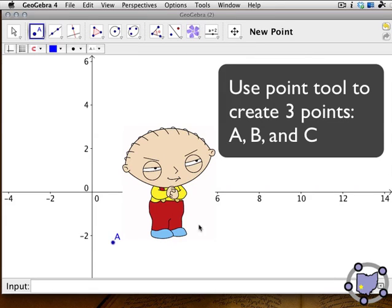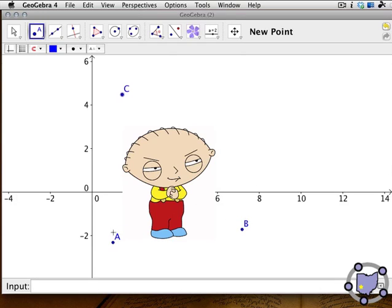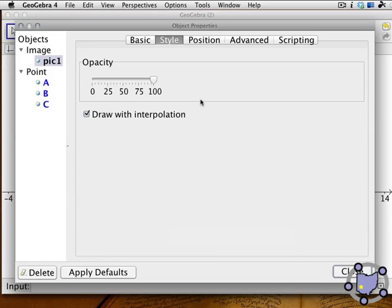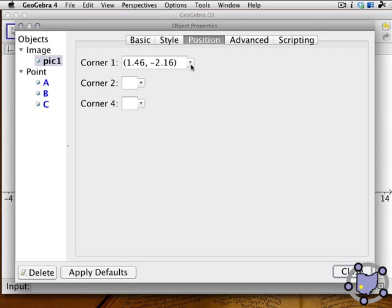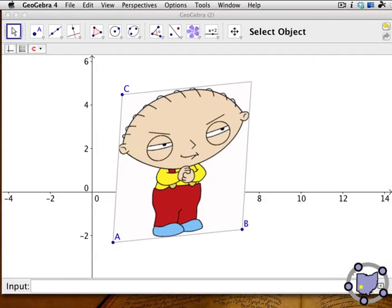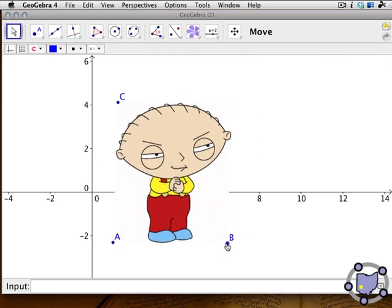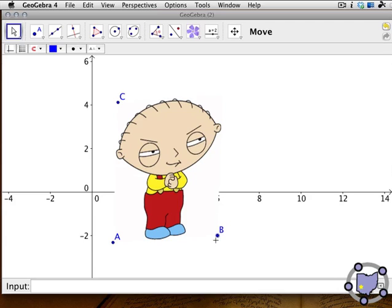Let's pick Family Guy and we're going to create three points A, B, and C that will serve as the corners of the image. Using the selection tool, we're going to right-click on this image, go to Object Properties, and we're going to define the position of the picture using Point A as corner one - that'll be the bottom left corner. Corner two will be defined as B. Corner four, the upper left corner, will be defined as Point C.